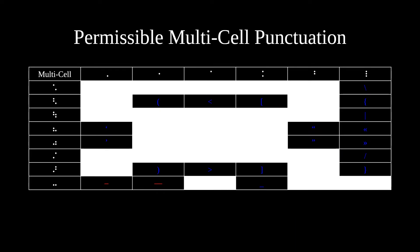This table gives a short list of permissible multi-cell punctuation in Braille. The row at the top of the table gives all the options for the first cell in the punctuation mark. The column on the far left of the table gives some of the options for the last cell in the punctuation mark.